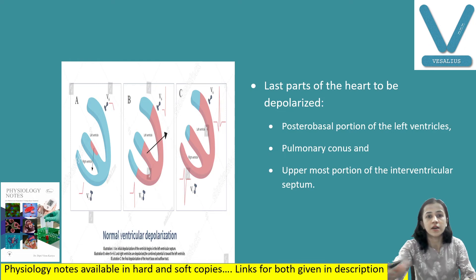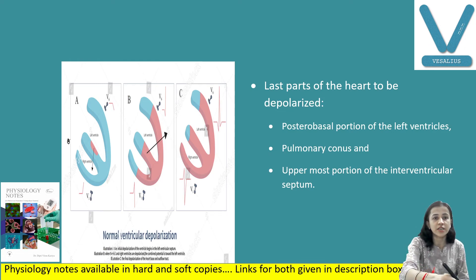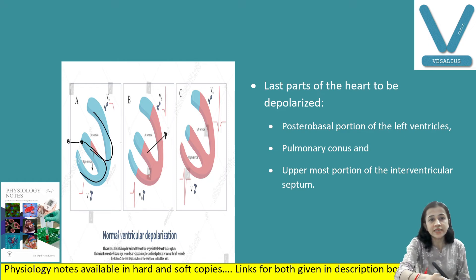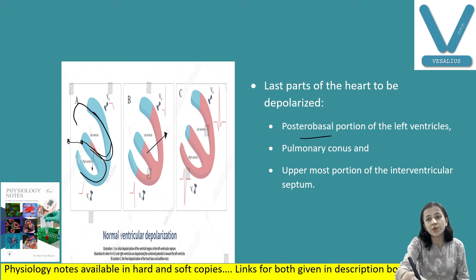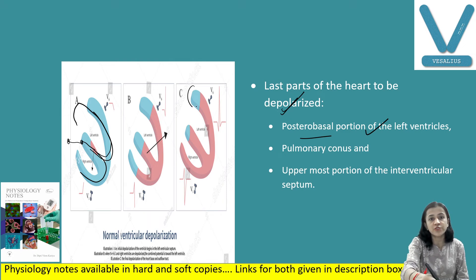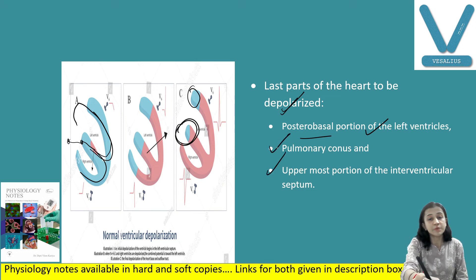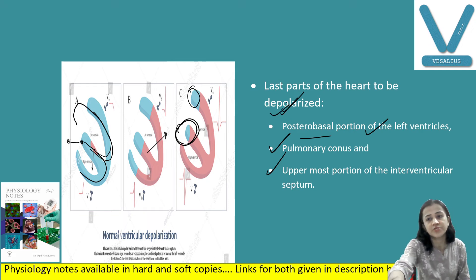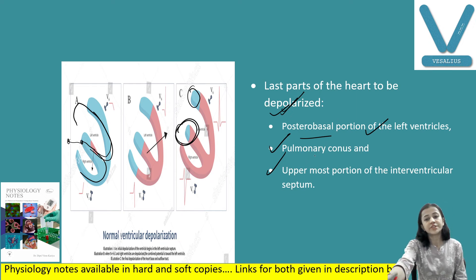The impulse passes from SA node to AV node, then to the bundle and bundle branches. The last portions of the heart to be depolarized are: the posterobasal portion of the left ventricle, the pulmonary conus, and the uppermost portion of the interventricular septum. This is an important MCQ point — remember these three portions are depolarized last.